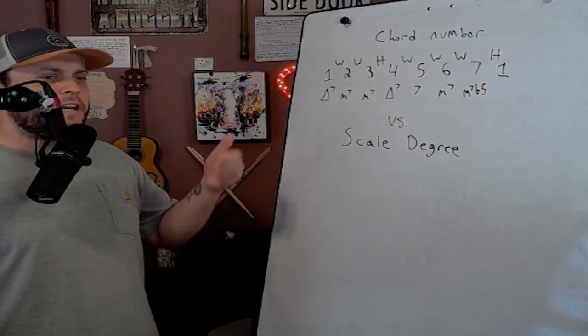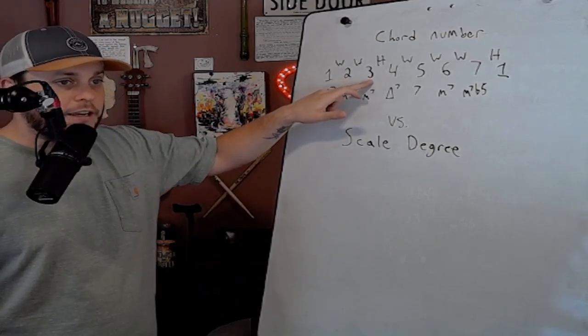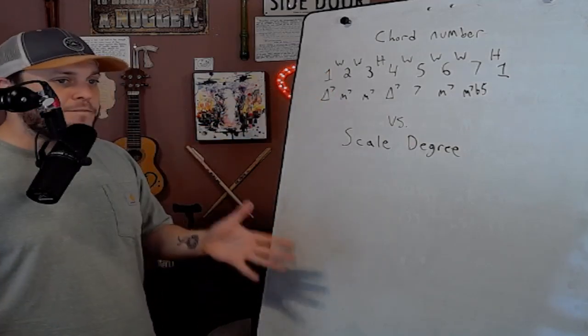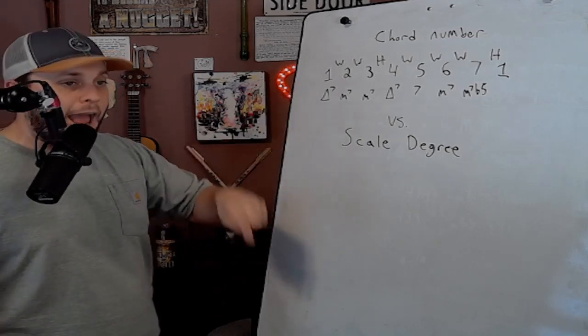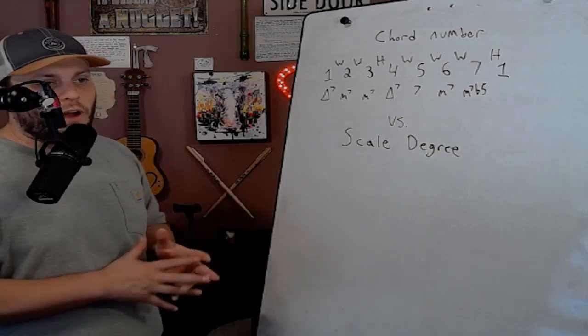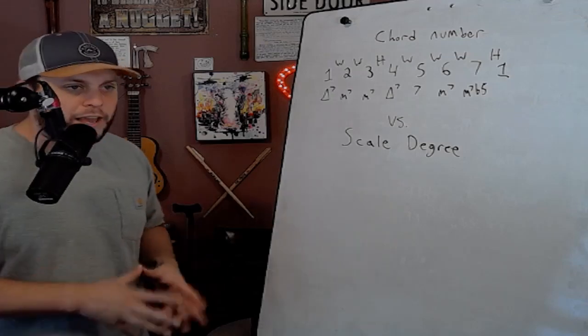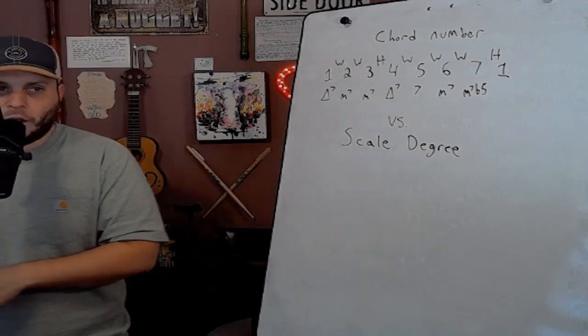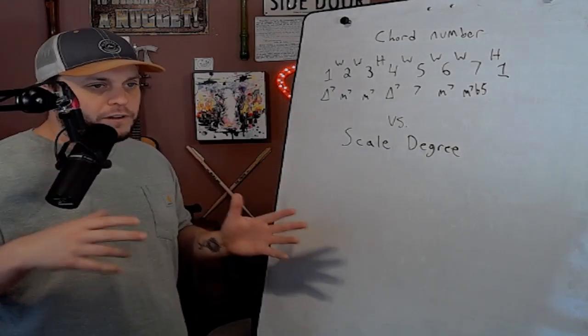So an F in this situation is not the three of a D. The natural three is up two whole steps from the root note. F is not up two whole steps from the root note. It's up a whole and a half step, making it the flat three to that chord. We've reviewed this a little bit in other videos, but what I'm trying to say is every note means a certain thing to every note.